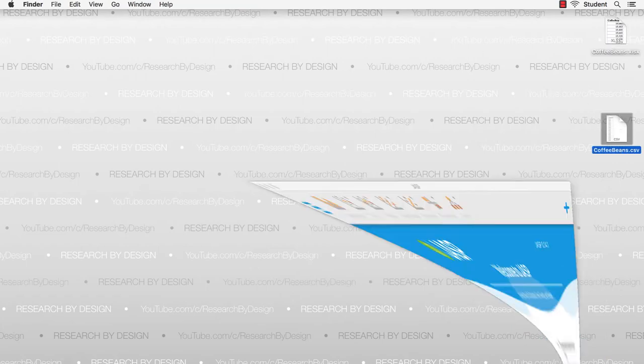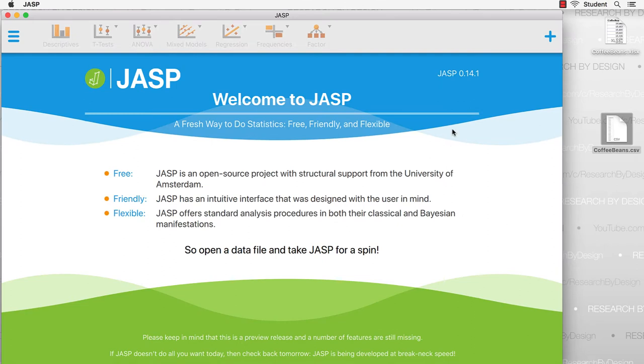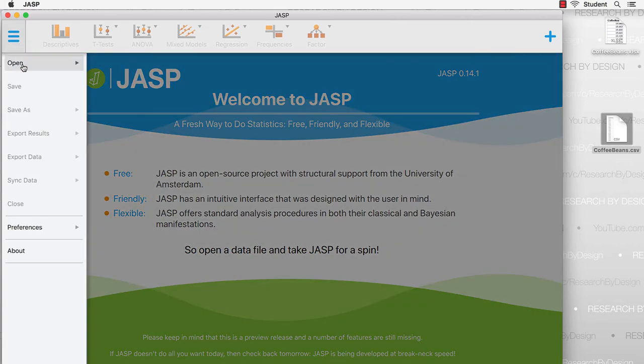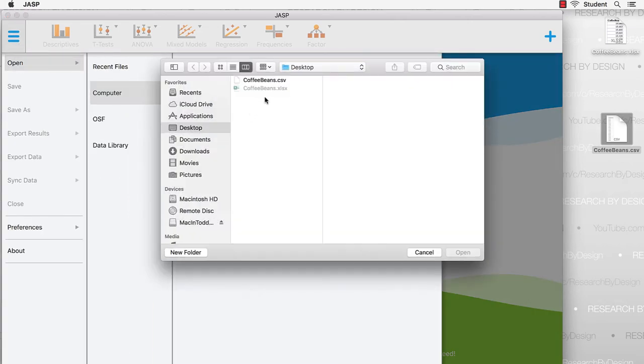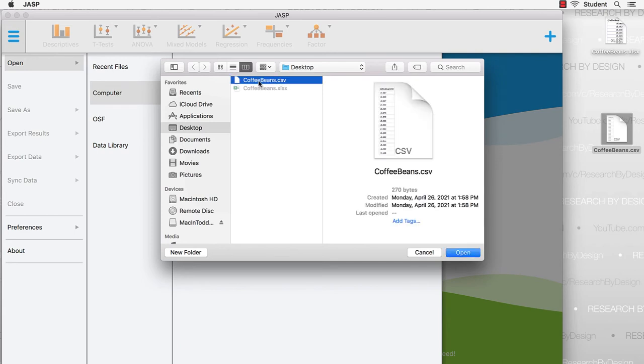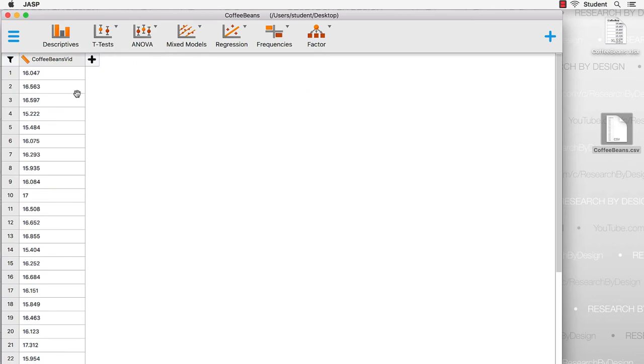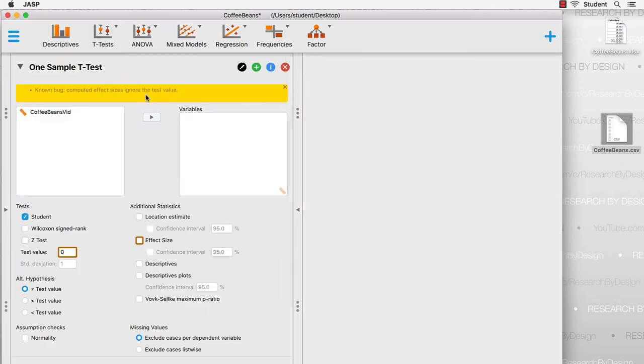Now I'm going to open JASP. Just so you know, I'm using JASP 14.1. I will go to open computer desktop and choose the coffee beans dot CSV data set. Click open, and there's my data. To do a one sample t-test, I will use the t-tests menu and choose one sample t-test.